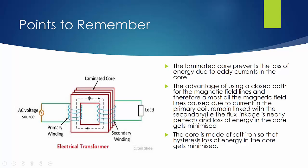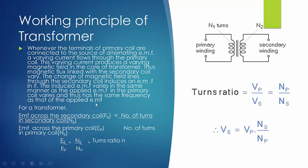Also, the closed path of the core prevents energy loss due to magnetic flux — the whole magnetic flux linked is used and there is no flux leakage, minimizing energy loss. Additionally, the core is made of soft iron, which prevents hysteresis loss of energy. These are the key points to remember.